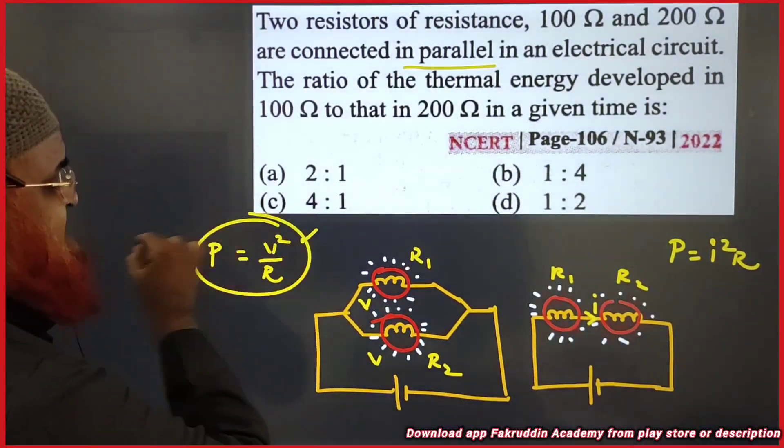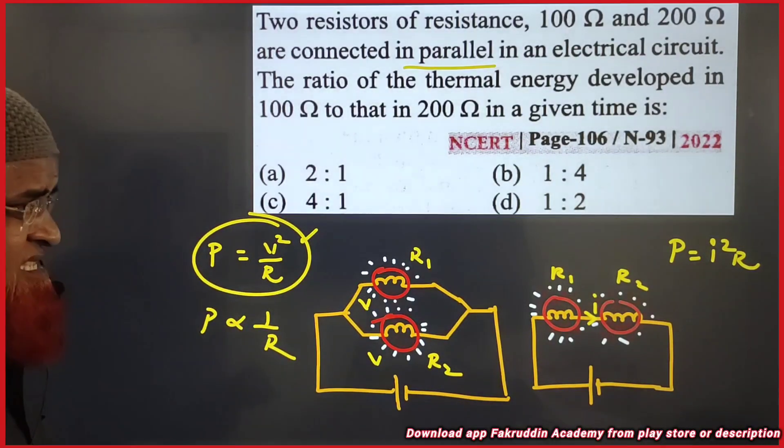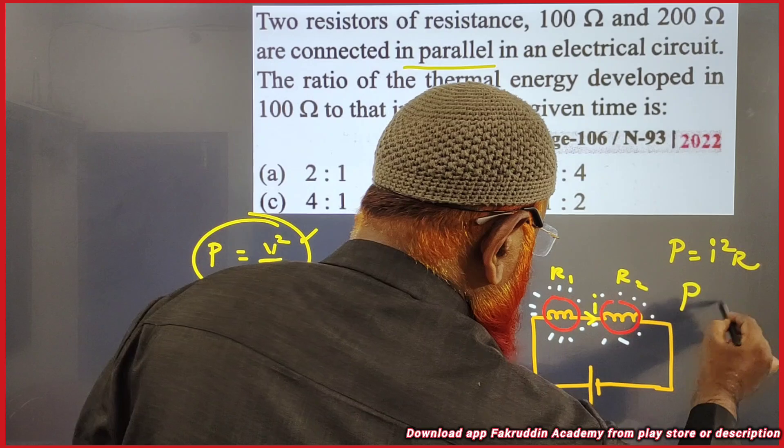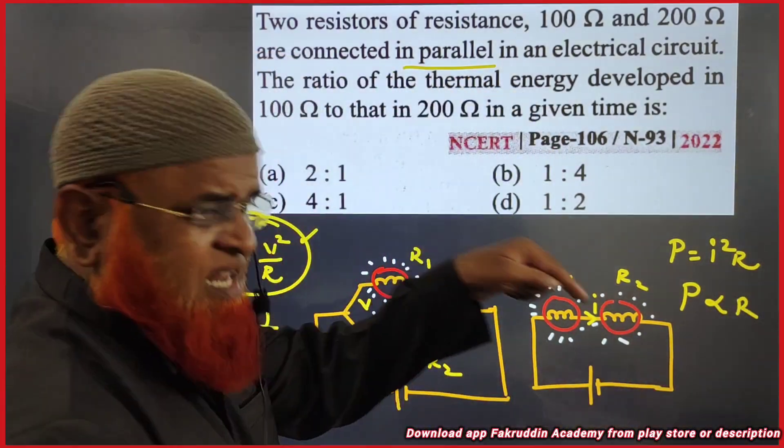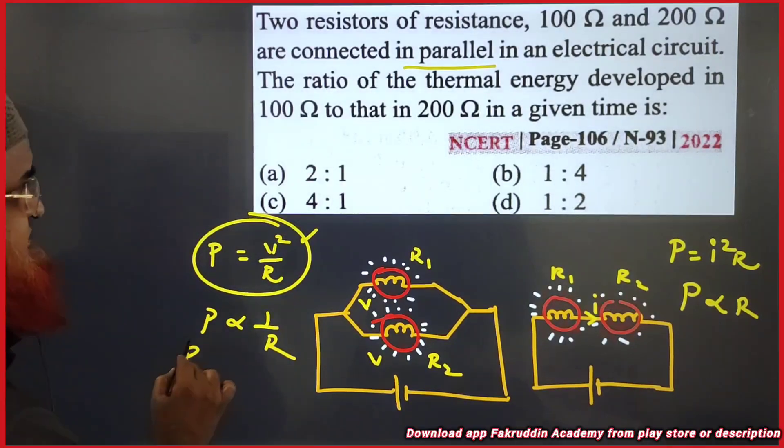So when you consider this concept, power is inversely proportional to resistance here. Here power is directly proportional to resistance if it is a series connection. But the problem says it is a parallel connection. So therefore, we write,